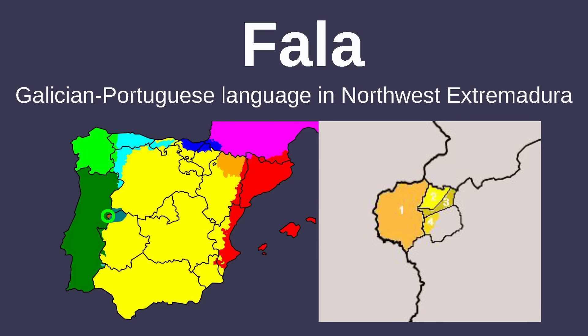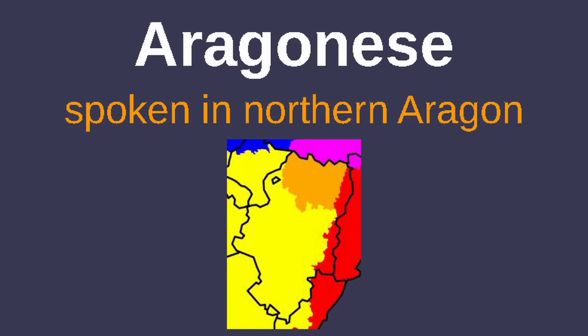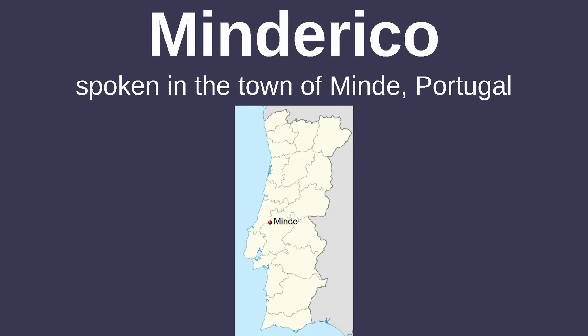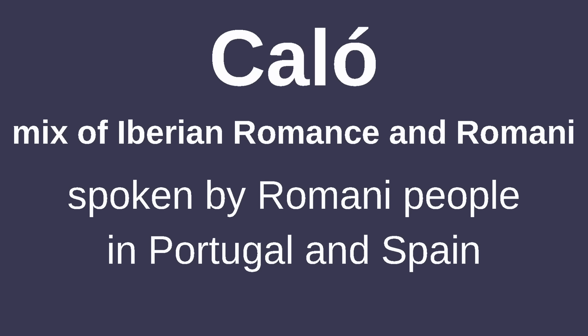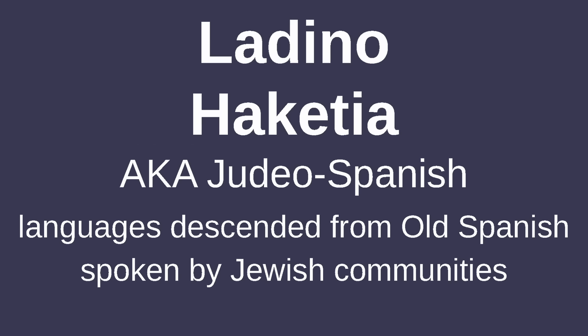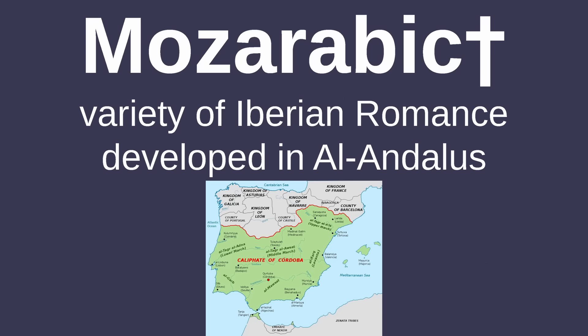Rounding out all the Iberian Romance languages are Fala, another Galician-Portuguese language spoken in northwestern Extremadura, Aragonese spoken in the Spanish region of Aragon, Minderico spoken in the town of Minde in Portugal, and Caló, which is a mix of the Iberian Romance languages and Romani. There's also Ladino and Haketia, spoken by Jewish communities, and the now-extinct Mozarabic, which developed among Muslims in Al-Andalus.